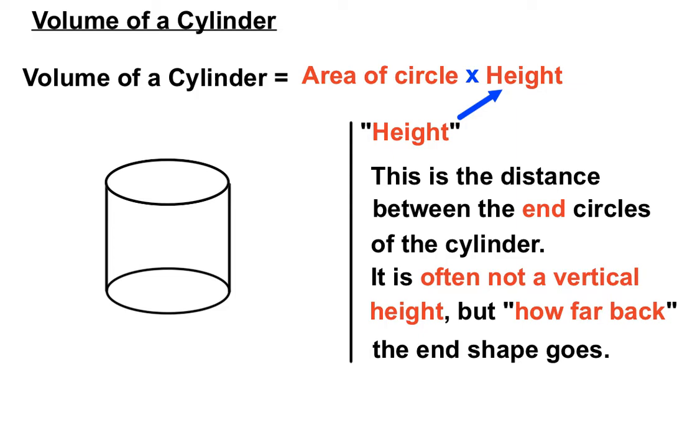Now the height, this is the distance between the ends of the circles. You've got a circle on the top and a circle on the bottom. So the height in this case is a vertical one, but often if the cylinder is lying down on that curved surface around the edge, then it's best for us to think about the height as being the distance between the two circles.